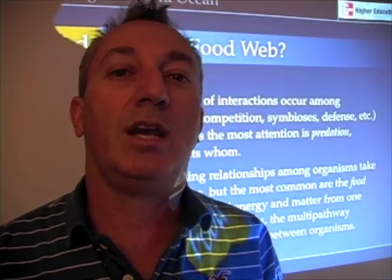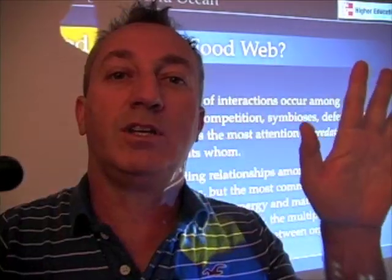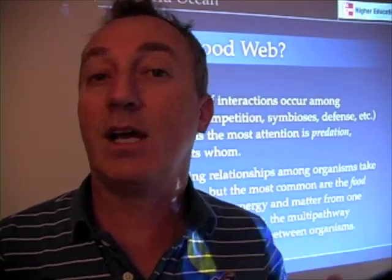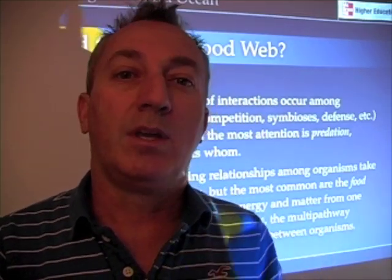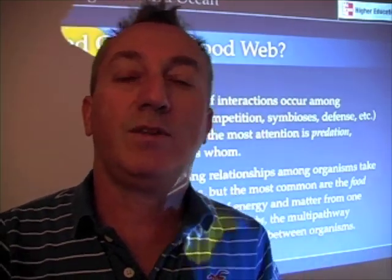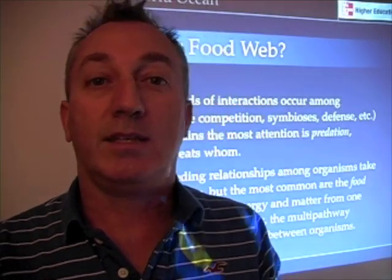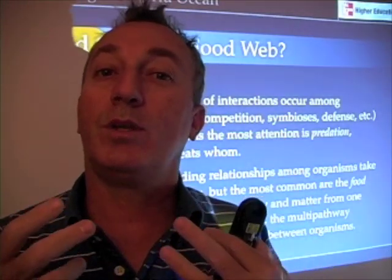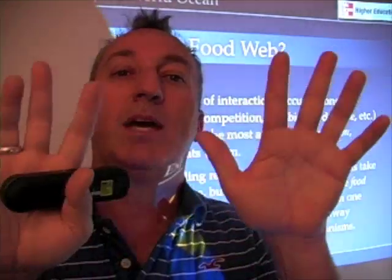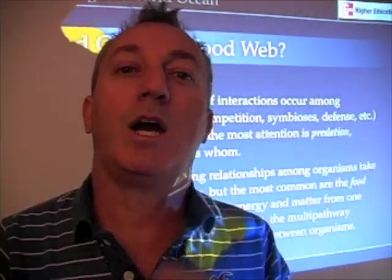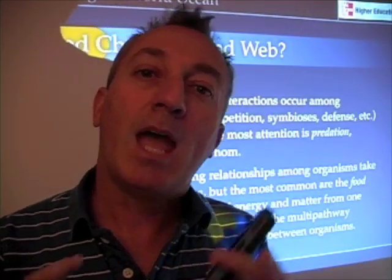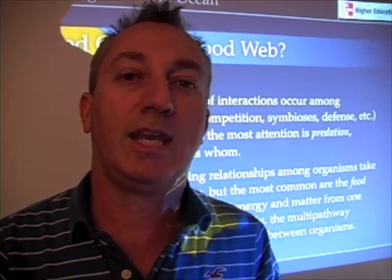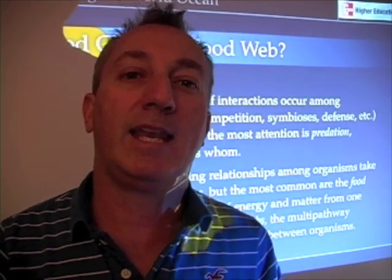However, most of the ocean really operates on a food web — a number of different interactions that might occur among organisms. Organisms might eat other organisms at different times in their lives, or eat more than one type of organism. Fish may eat squid, fish may eat plankton, squid may eat plankton. Food webs more realistically model the way that energy and matter get transferred from lower trophic levels to higher trophic levels. We're not going to forget about food chains, though, because in many ways they are a simpler way for understanding the ecology of the world ocean.